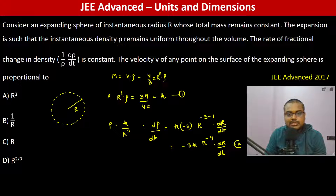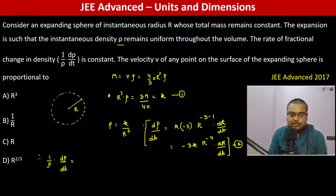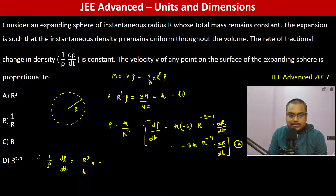So this is dρ/dt. Therefore 1/ρ · dρ/dt is constant. We can write 1/ρ as r³/k, and dρ/dt is minus 3k times r to the power minus 4 times dr/dt.